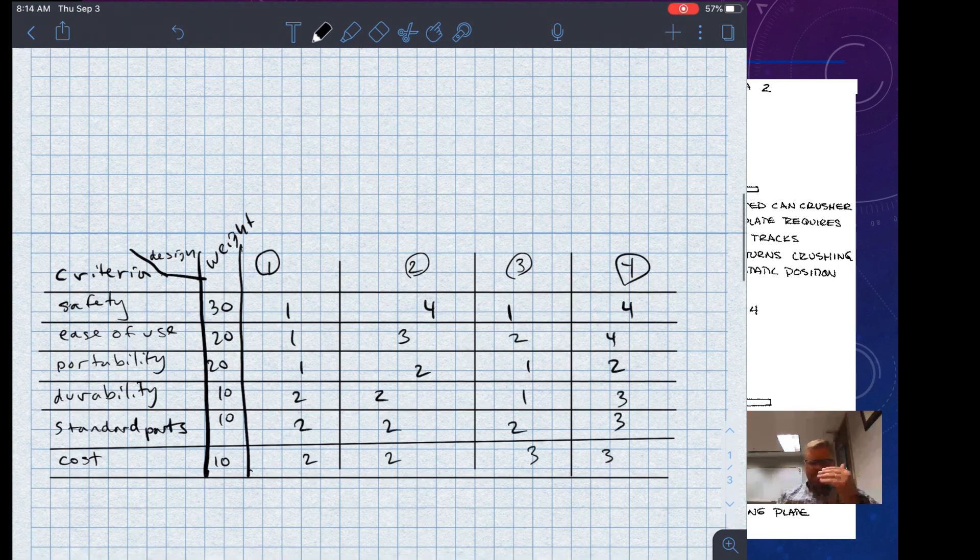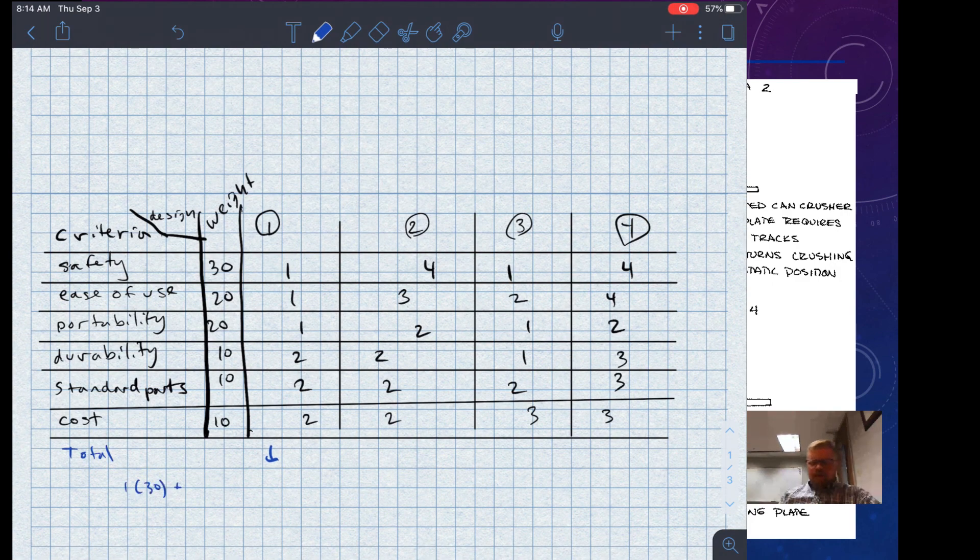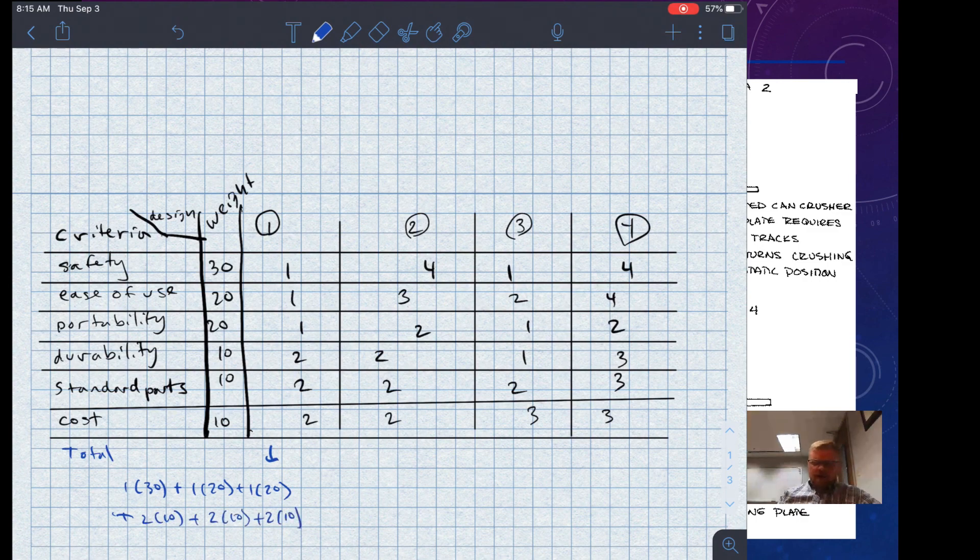And so I'll do that for each of the criteria. Ease of use, portability, durability, standard parts, cost. And then in order to get the total, what I want to do is I want to multiply the weighting factor by the rating that I've given it and then add that up. So for the first column, design idea one, I've got one times 30 plus one times 20 plus one times 20 plus two times 10 plus two times 10 plus two times 10, which is 130. Similarly, using the same method, design two comes in at 280, design three comes in at 150, and design four comes in at 330.